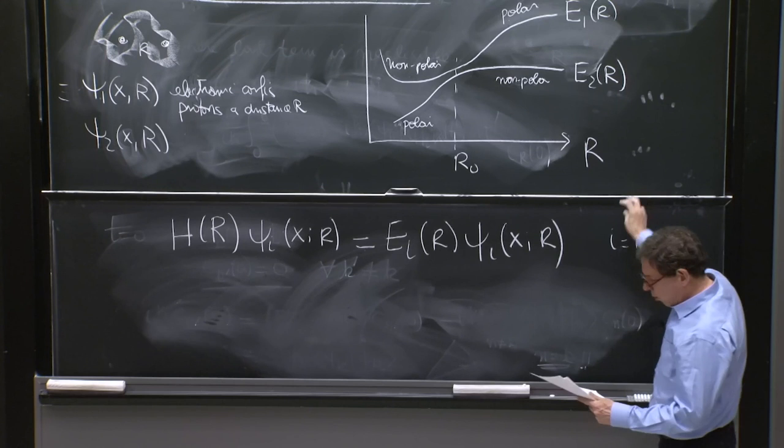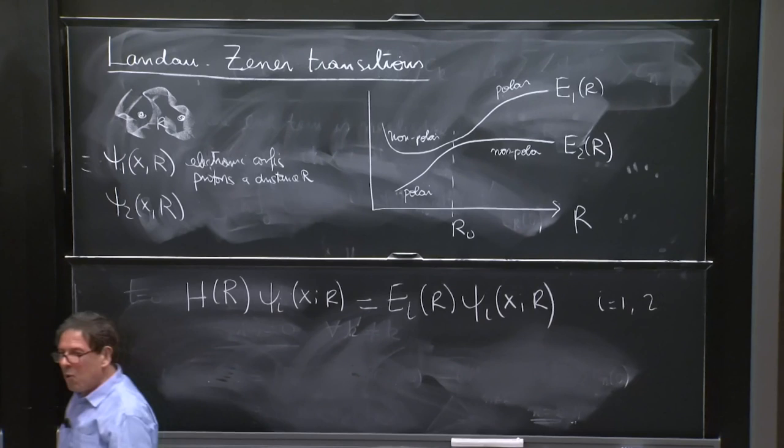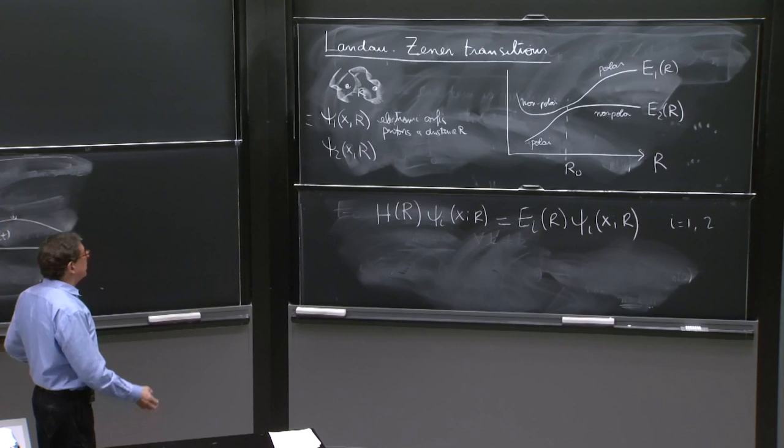So if you would follow one of the energy eigenstates, there's a critical value of r where the electronic configuration is such that it goes from nonpolar to polar. And in the other energy eigenstate, it goes from polar to nonpolar. So the question is, first of all, what does all this have to do with instantaneous energy eigenstates and time dependence?